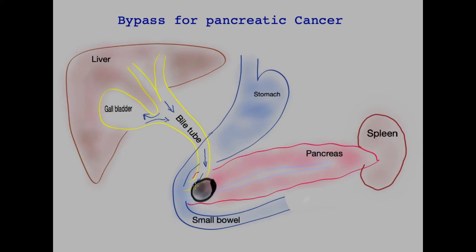I've drawn a tumour in the head of the pancreas. The best treatment is surgical resection, that is complete removal of the tumour. However that is not always possible. In that case the surgeons may perform a bypass procedure to prevent the risk of future complications.